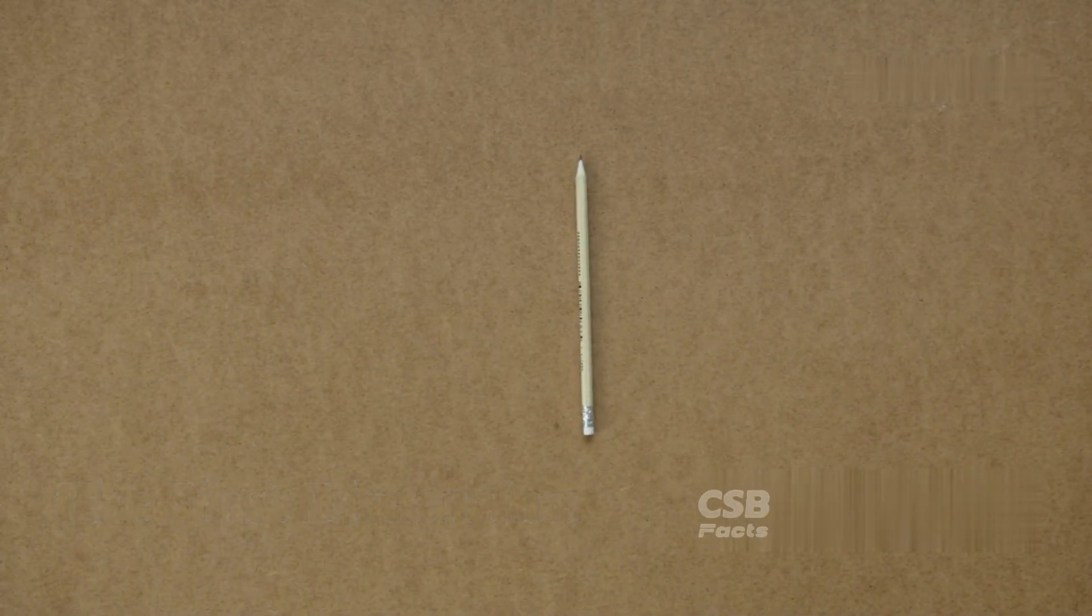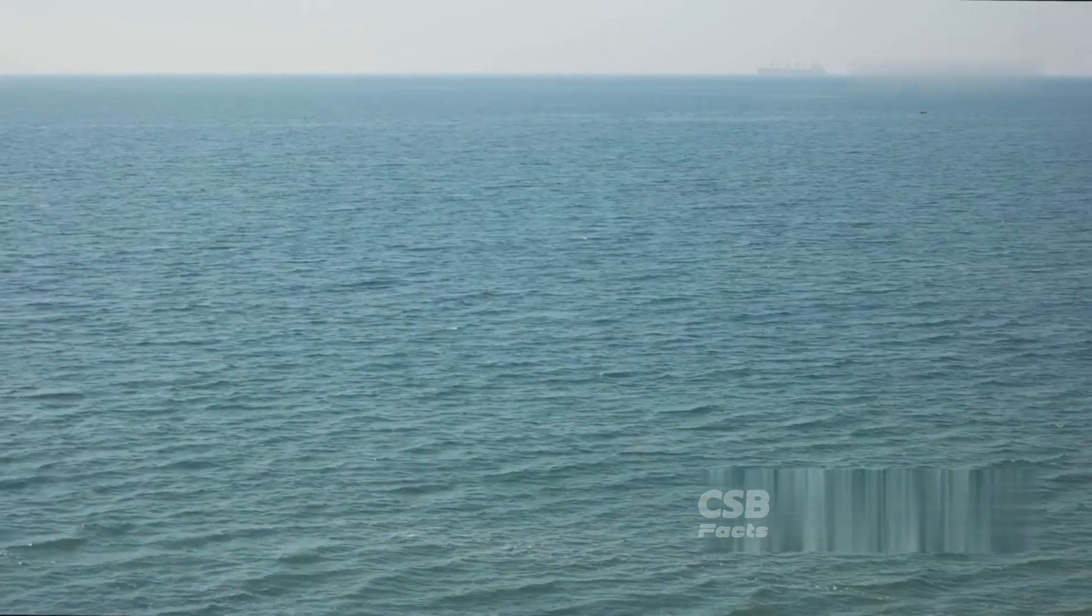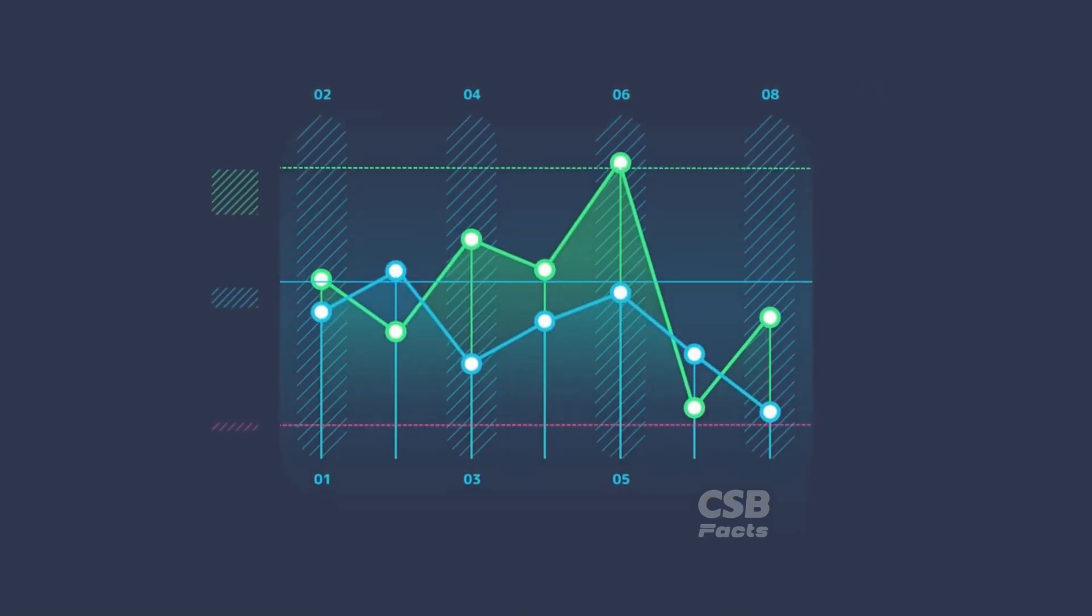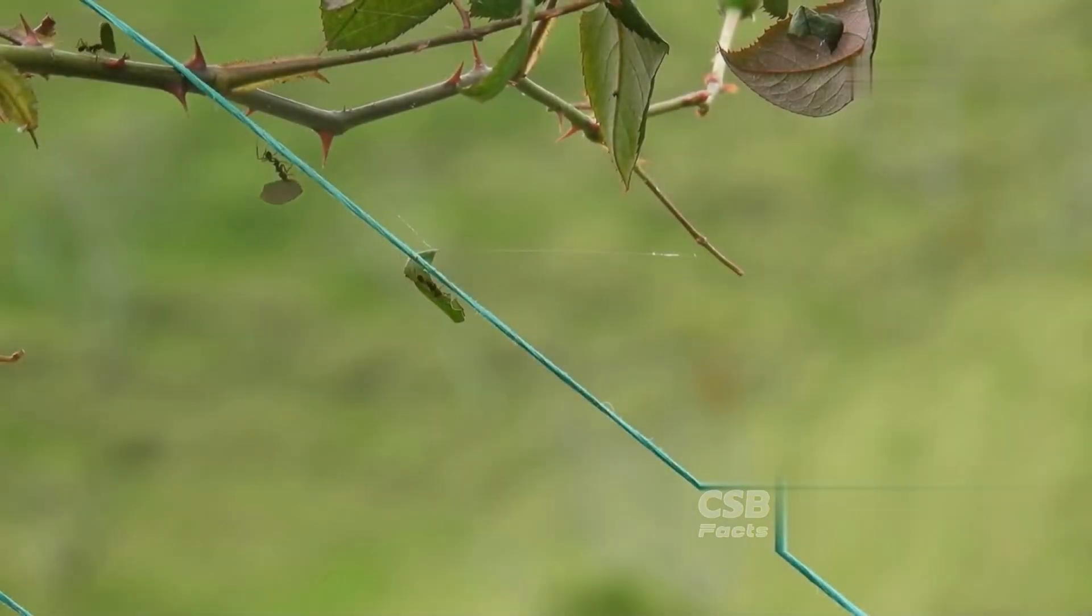Imagine a thin, straight line. This line stretches infinitely in both directions. This is the first dimension. It only has length. Think of an ant walking on a tightrope. The ant can only move forward or backward.